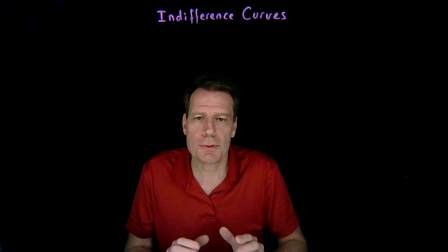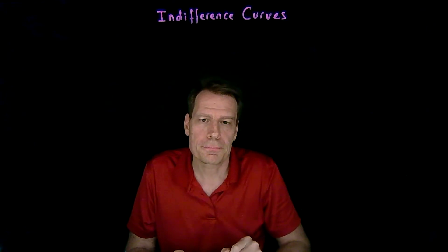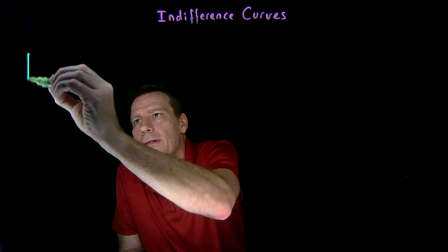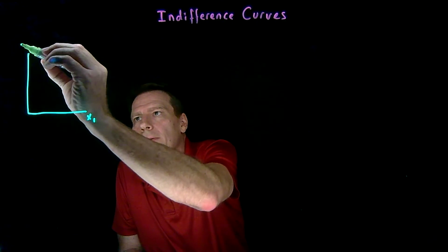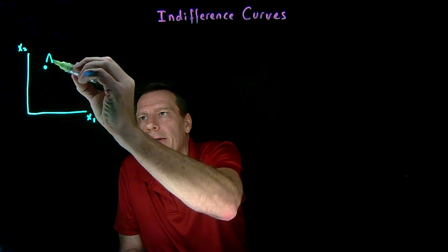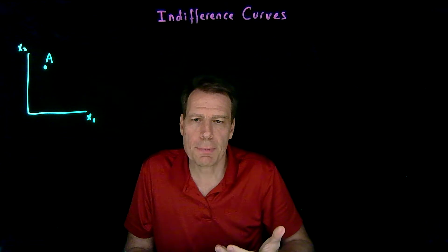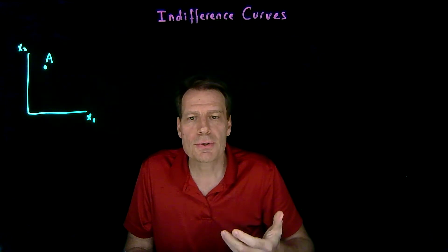We can now use those assumptions to derive the fundamental tool that we're going to use to talk about tastes. And that tool is called an indifference curve. So what do we mean by that? Well, let's start with some initial bundle of goods. We can have two goods, x1 and x2, and an initial bundle A. We're going to say that the indifference curve that contains bundle A is a set of bundles that's just as good as A.